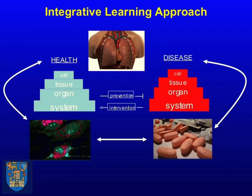I want to give you a visual idea of the philosophy behind the degree and the approach we use. We're thinking about human health and disease, and we set out to describe it from the biological perspective — from cell biology to tissue to organ to organ system level, and its dysfunction in disease along the same line of hierarchy.